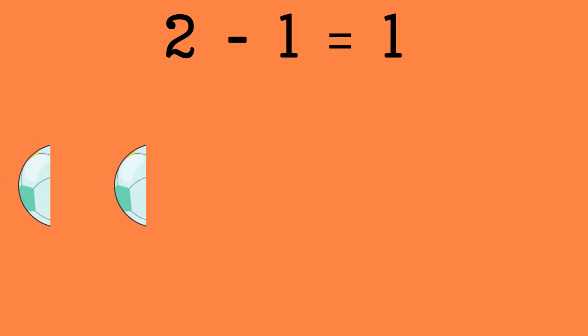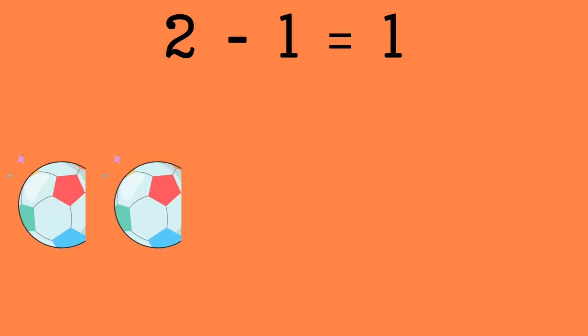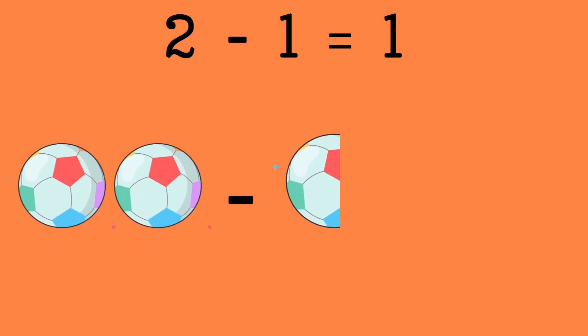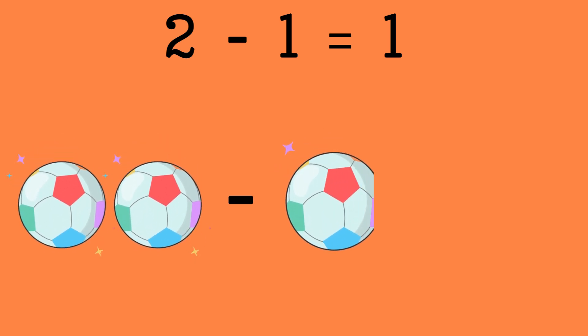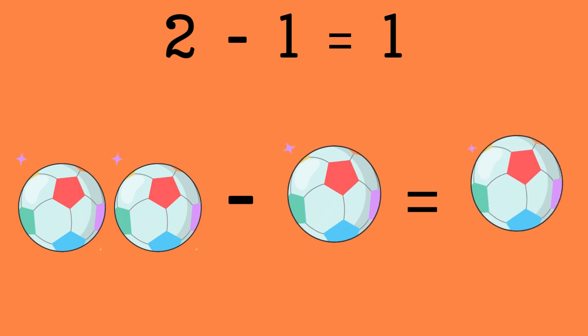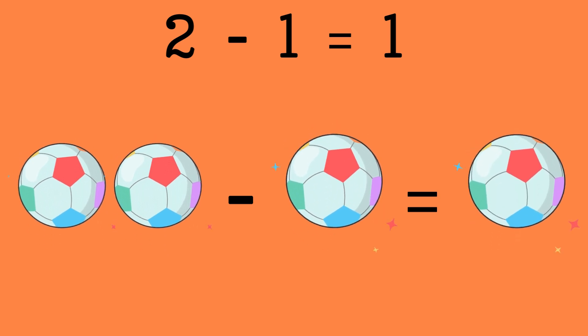2 minus 1 equals 1. Let's say you have 2 balls and you gave 1 ball to your friend. How many balls left? Correct, 1 ball.